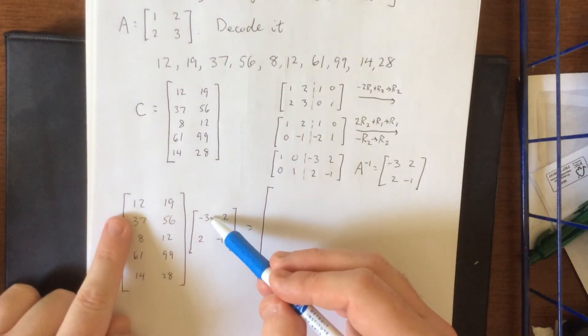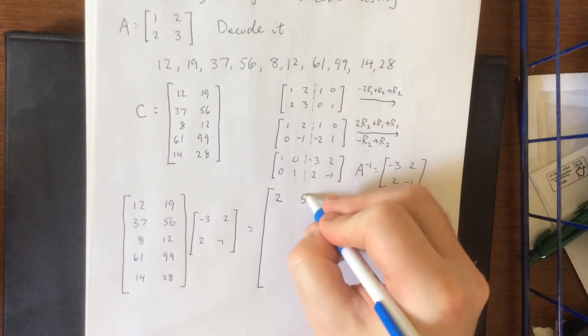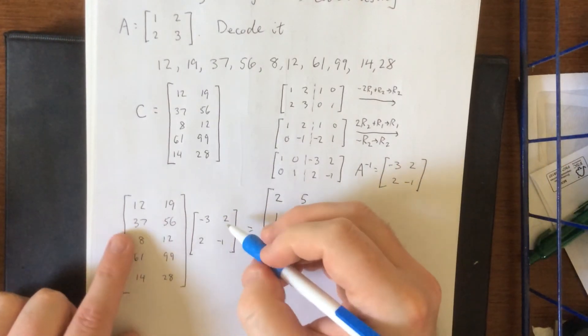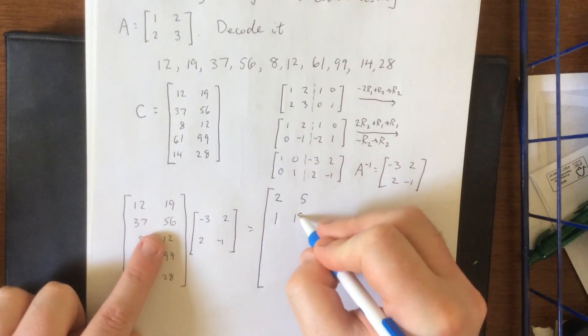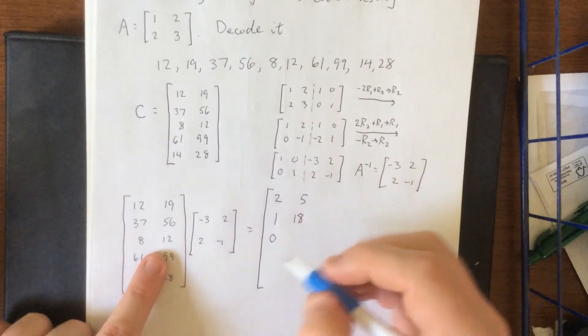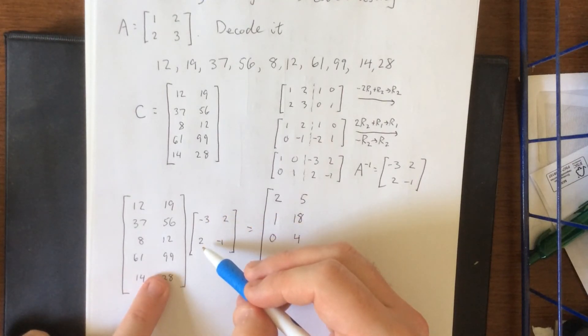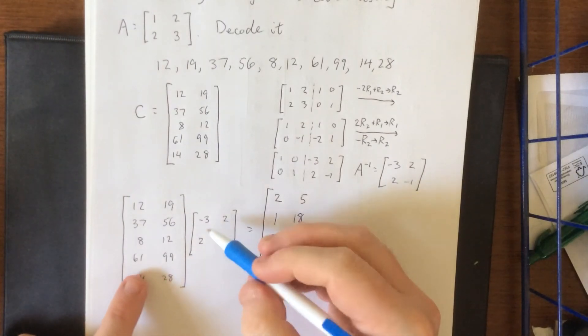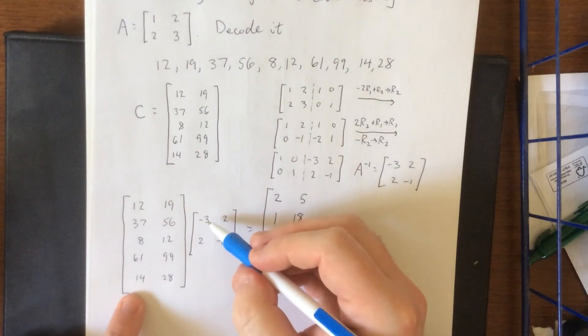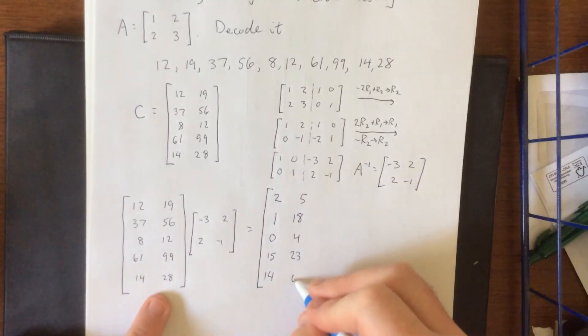So negative 36 plus 38, and 24 minus 19. Negative 111 plus 112, that'll be 1, and then 74 minus 56. We've got ourselves negative 24 plus 24, and 16 minus 12. Negative 183 plus 198, I think that's 15. And then we got positive 122 minus 99. That'll be negative 42 plus 56, and 28 minus 28.